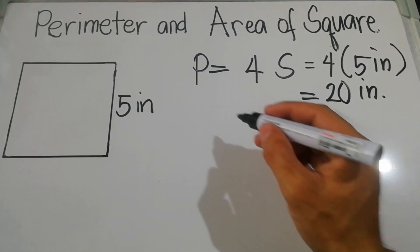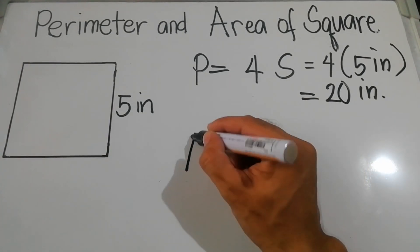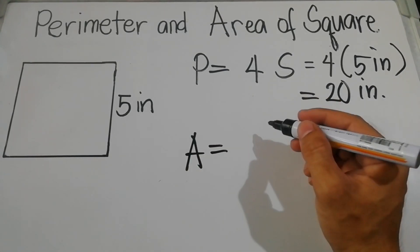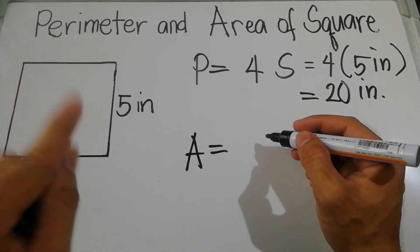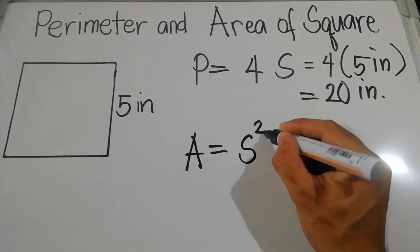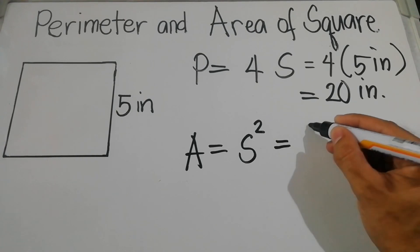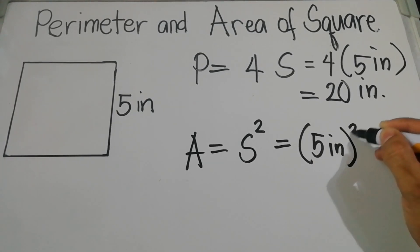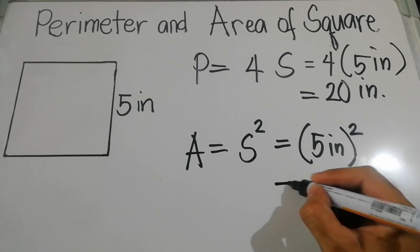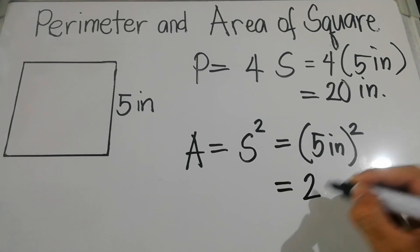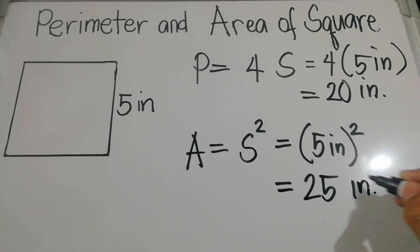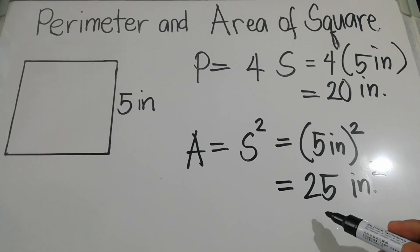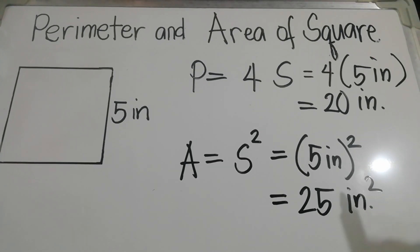For the area of the square, we multiply s times s, or s squared, meaning we square 5 inches. So 5 inches squared equals 25 square inches. Our area is 25 square inches.